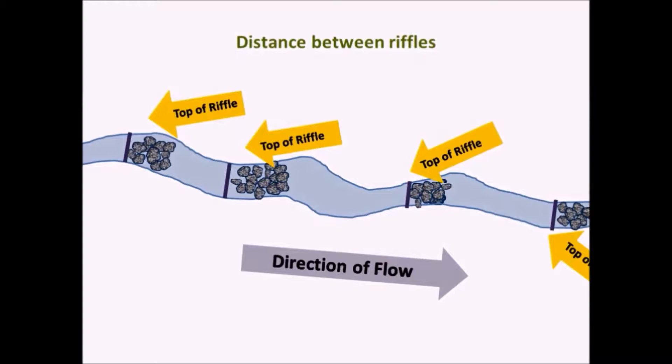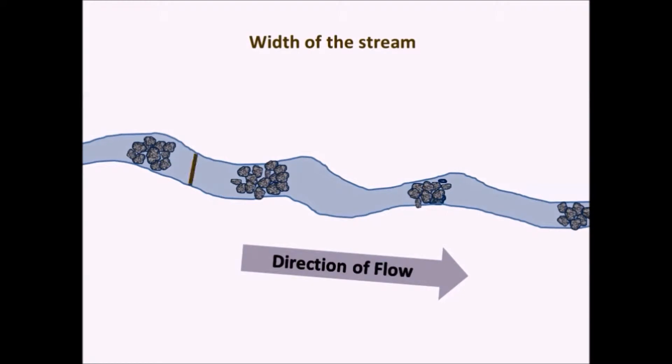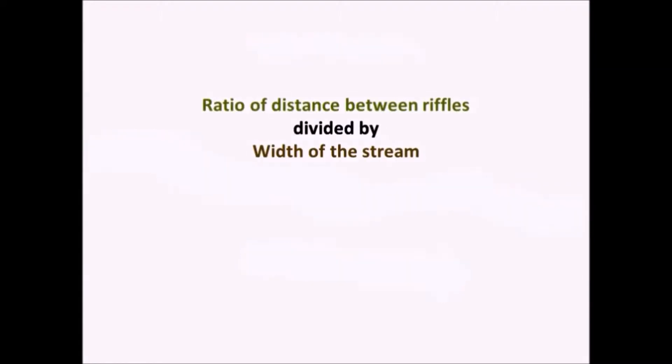A high degree of sinuosity also provides for diverse habitat and fauna, and the stream is better able to handle surges when the stream fluctuates as a result of storms.